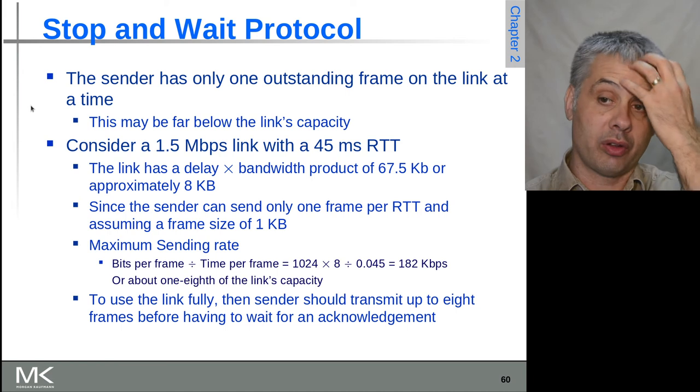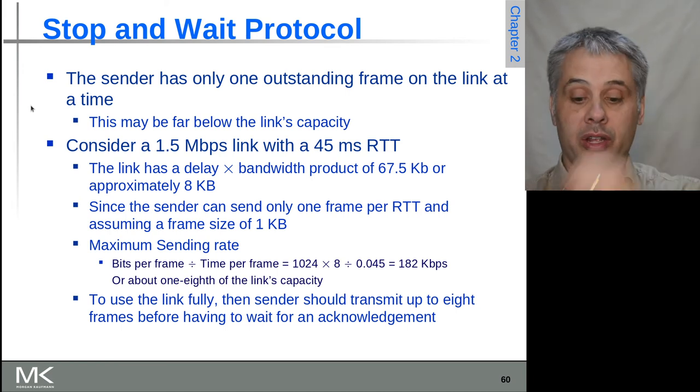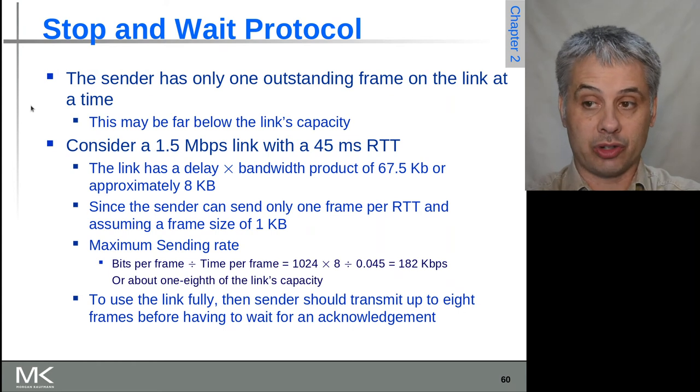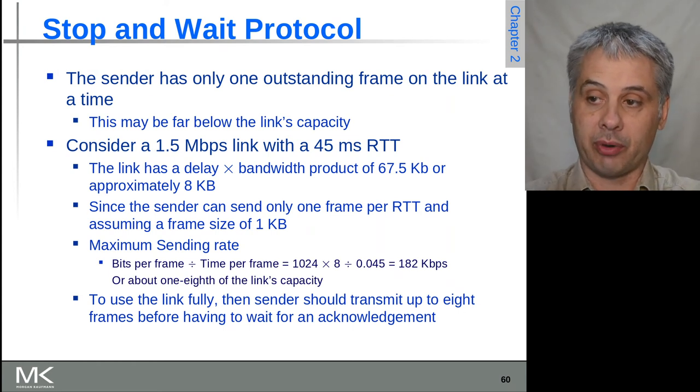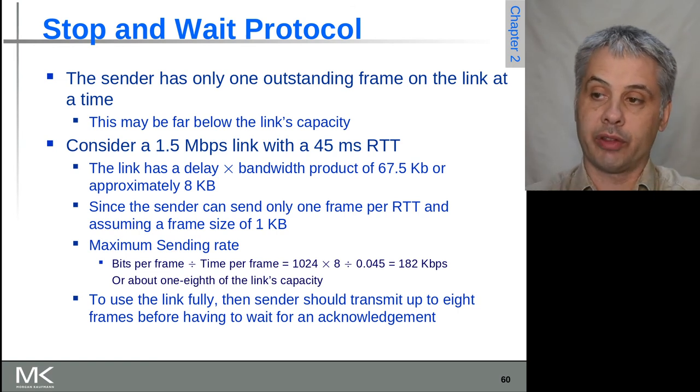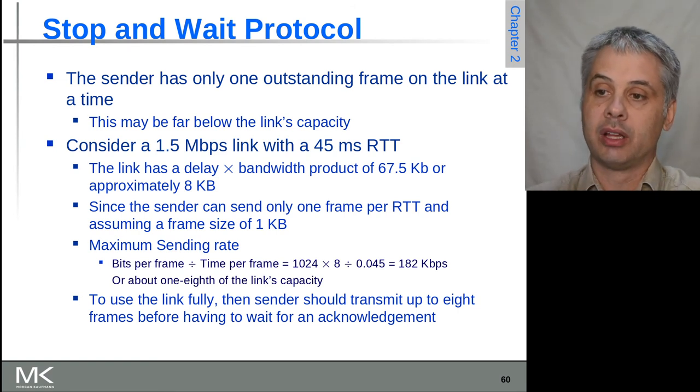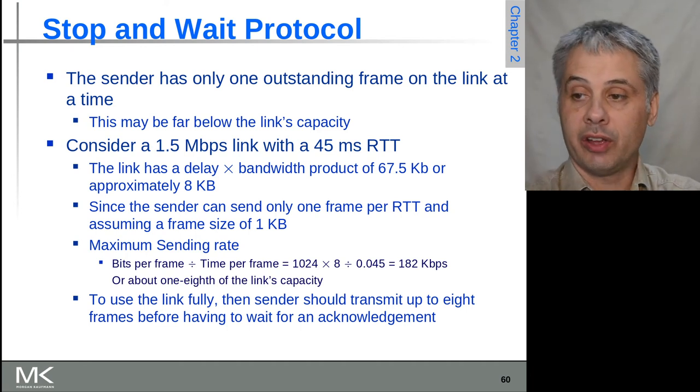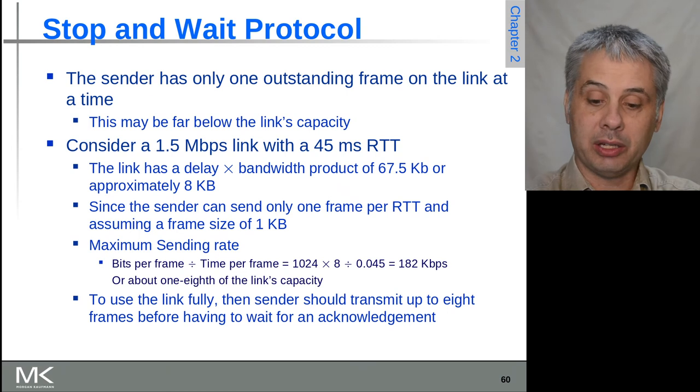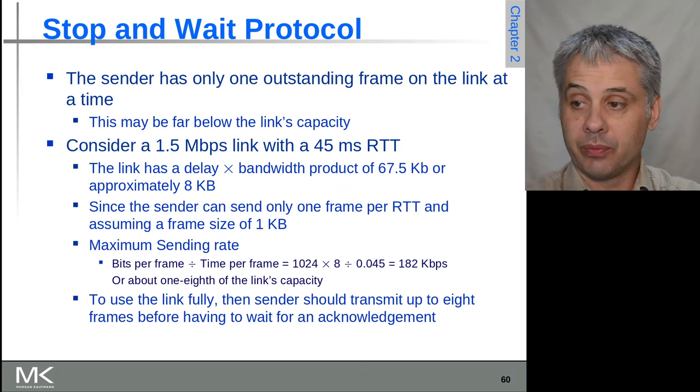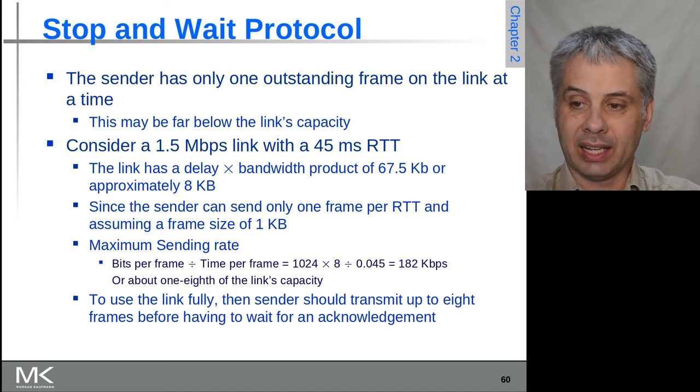A problem with this though is you can only have one frame outstanding at a time. If the link is very fast but has a high round trip time, then we can have a very large bandwidth delay product. For example, a 1.5 megabit link with a 45 millisecond round trip time has a delay bandwidth product of about eight kilobytes. But if each frame is only one kilobyte, then we can only have one kilobyte in transit at a time. We're actually wasting seven eighths of the link.